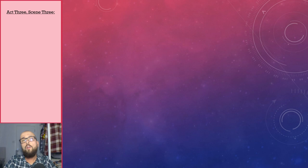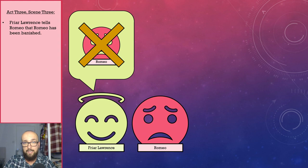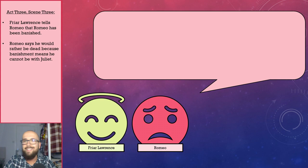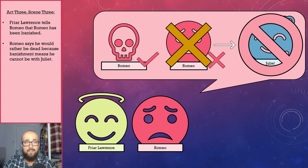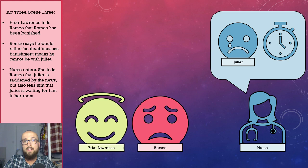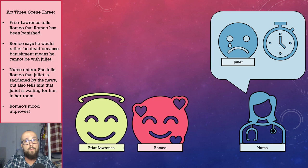Over in Friar Lawrence's cell, the friar informs Romeo that he has been officially banished by the prince. Romeo exclaims that he would rather be dead because banishment means he cannot be with Juliet. The young Montague is very emotional in this scene. After a while, Juliet's nurse enters and tells him that although Juliet is very sad, she is patiently awaiting his arrival at her bedroom. Hearing that Juliet wishes to see him, Romeo's mood improves dramatically.